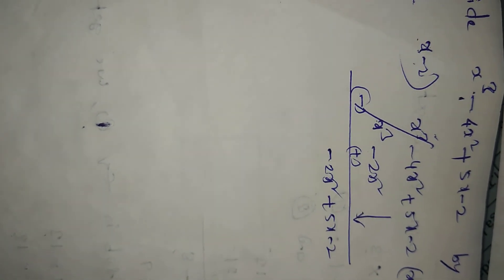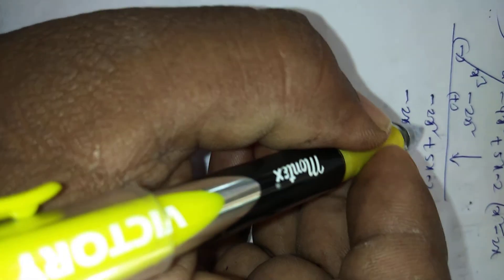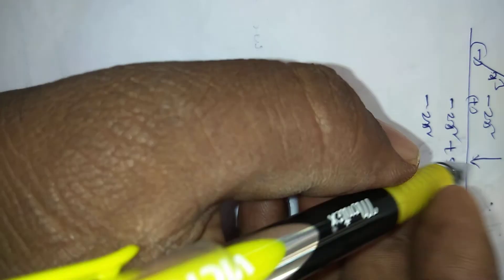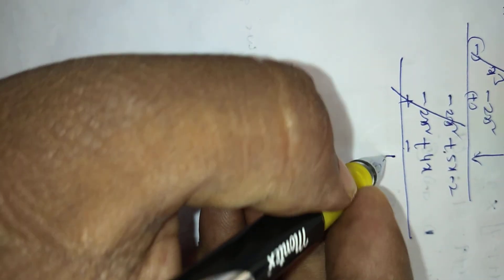Now step 2. In step 2, here, minus 2x square divided by x. x one time cancel, the remaining part is minus 2x. Minus 2x square, minus 2 into minus plus 4x. Plus minus, plus 5 minus 4, 1x bring down minus 2.